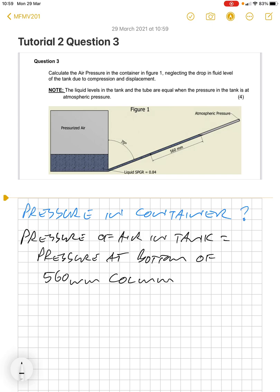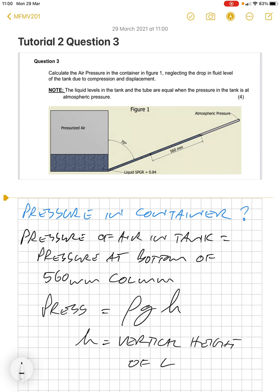In other words, the pressure acting down on the fluid is equal to the pressure exerted in the fluid itself. The pressure is ρgh, where h equals the vertical height of liquid.